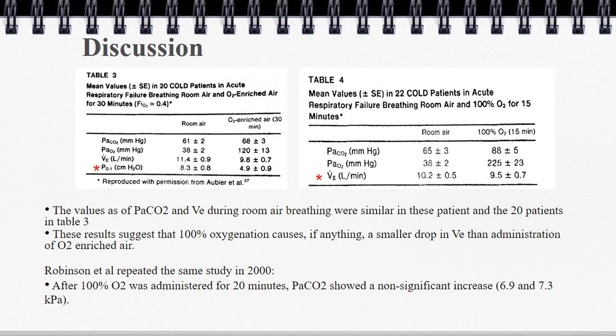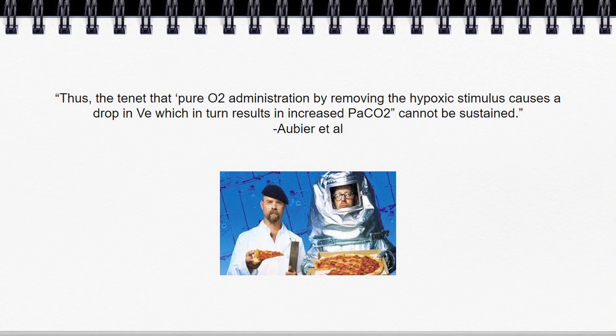Comparing the FiO2 40% and 100% groups, the values of arterial CO2 and minute ventilation during room air breathing were similar. Interestingly, patients on FiO2 100% actually had less of a drop in their minute ventilation. This study was also repeated by Robinson and his group in 2000 with very similar results. Obier concluded: 'The tenant that pure O2 administration, by removing the hypoxic stimulus, causes a drop in minute ventilation which in turn results in increased arterial CO2, cannot be sustained.'